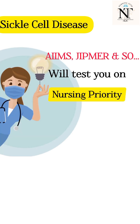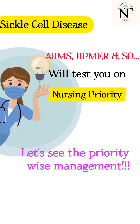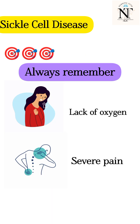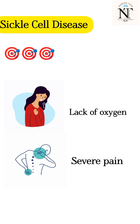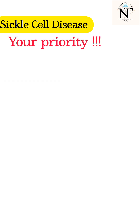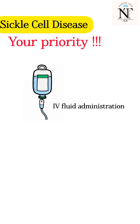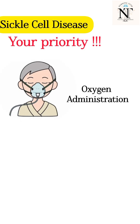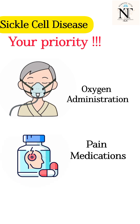In your exams, they will ask what is the nursing priority in patients with sickle cell crisis. Always remember that even if the patient is having lack of oxygen or is in severe pain, your priority will be IV fluid administration. When you administer IV fluids, this helps in flushing out the RBCs that are clamped in the blood vessels. Then go for oxygen administration, and then pain medication.